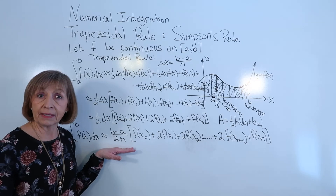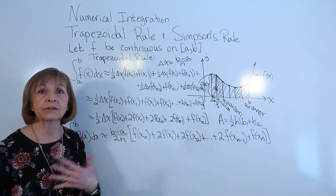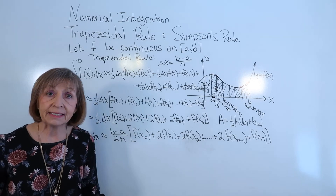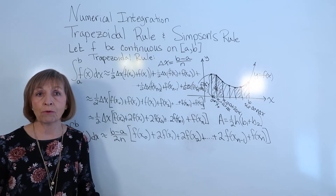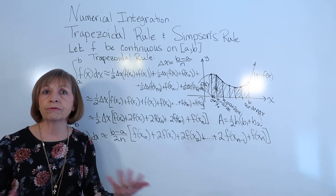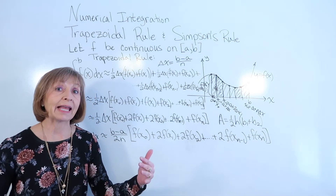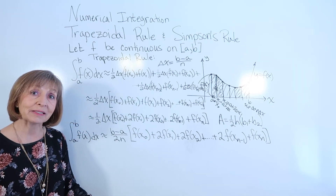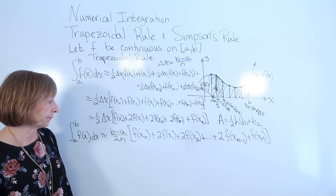In a later segment there will be a description of how to determine how many subintervals you need for the trapezoidal rule and for Simpson's rule if you have a specific accuracy you want to attain with your approximation. For these early problems, it's just a matter of running your values through.